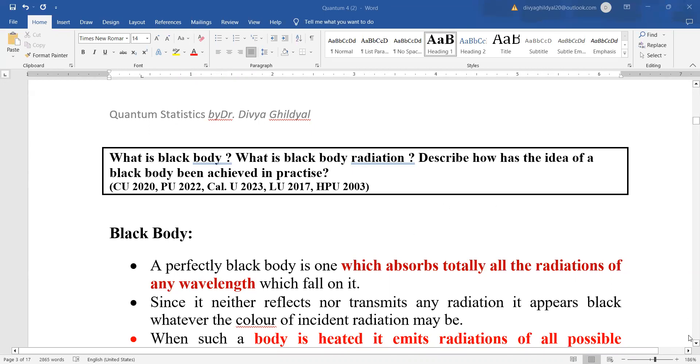Now this question, the way it is asked is, what is black body? As you all know, it is one which absorbs totally all the radiations of any wavelength which are falling on it. Since it is neither reflecting nor transmitting any radiation, it appears black.